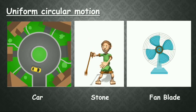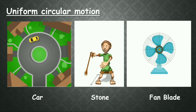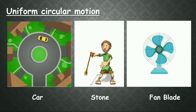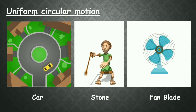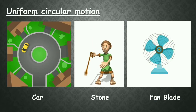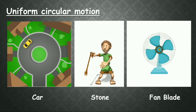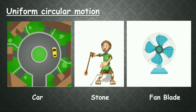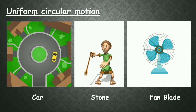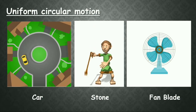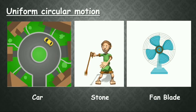You are seeing three pictures. In the first picture on the left hand side, a car is moving around a circular path continuously with a constant speed. In the middle picture, a boy is making a stone rotate in circular motion by applying some force. And in the right hand side picture, the blades of a fan are rotating in circular motion.